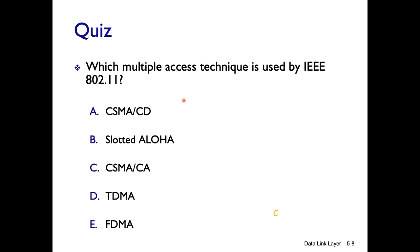Quiz: Which multiple access technique is used by IEEE 802.11? Option A: CSMA/CD — collision detection is not possible in wireless, so this is eliminated. Option B: Slotted ALOHA. Option C: CSMA/CA — collision avoidance. Option D: TDMA. Option E: FDMA. The correct answer is C, CSMA/CA. All versions of 802.11 — A, B, G, N, AC — use CSMA/CA.